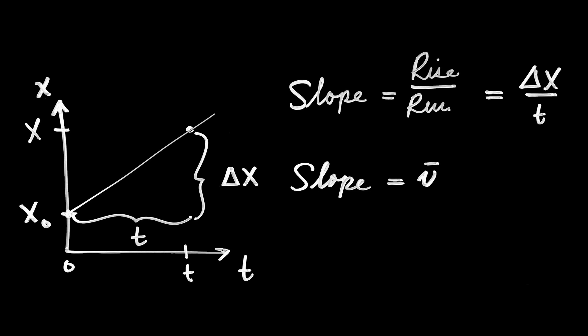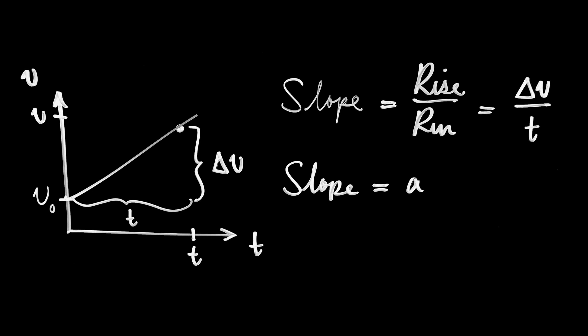By looking at the slope of a position-time graph, I can determine what the velocity is — perhaps not calculate it precisely from the graph, but I can tell where velocity is greater or lesser, and whether it is positive or negative, according to the first of three graph facts: the slope of the position-time graph is velocity.